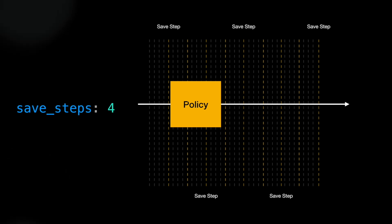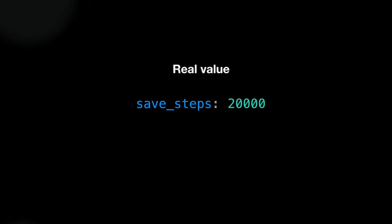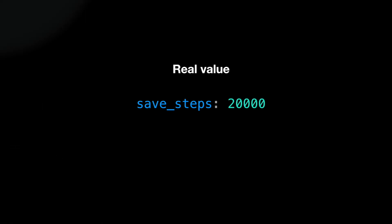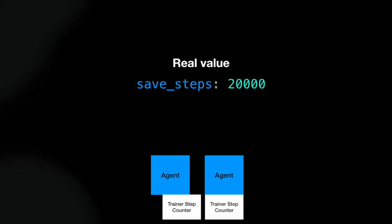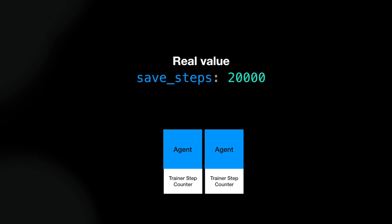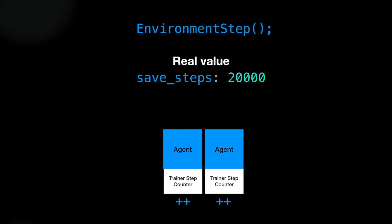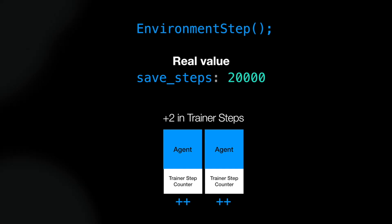In reality, the number is much larger to really capture a diverse set of policies, usually between 10,000 to 100,000 steps. It is important to know which kind of step this is referring to, because not all steps are created equal. Save steps is referring to trainer steps. The trainer steps are counted for each agent that is actively trained, meaning each time an environment step is taken, the trainer steps are increased by the number of learning agents in your scene.